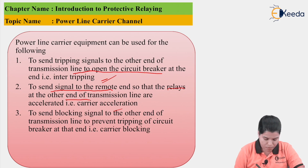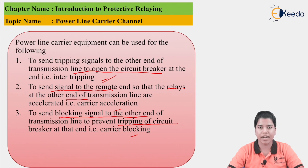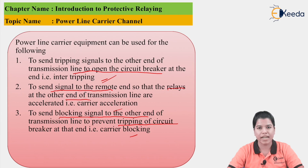Next is to send a blocking signal to the other end of the transmission line to prevent tripping of the circuit breaker at that end. This is called carrier blocking. There are two types of conditions: normal condition and abnormal condition. The protective equipment should operate only in case of abnormal condition. Hence, the power line carrier channel can be used to send the blocking signal to the circuit breaker so it might not operate under normal condition. Also, there are two types of protection — primary protection and backup protection. If the circuit breaker is used as backup protection, then it must not operate for the primary protection. The blocking signal can be sent by using the power line carrier channel.